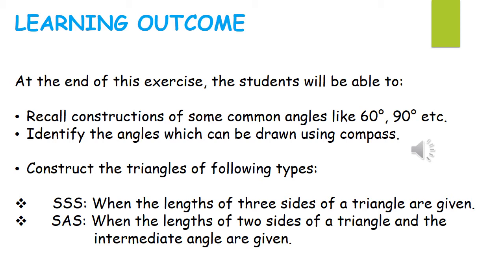Learning outcome for exercise 10.2: students will be able to recall the construction of common angles like 60°, 90°, 30°, 45°, etc., which can be drawn using a compass. They will also be able to identify which angles can be drawn only using a compass, and construct triangles using the SSS property — that is, side-side-side, when the lengths of all three sides are given — as well as SAS, when the lengths of two sides and the included angle are given.